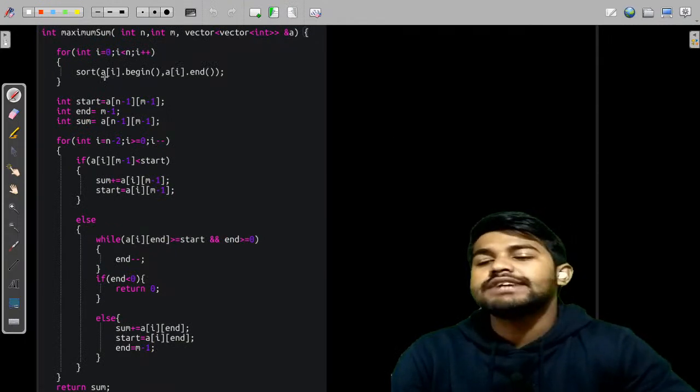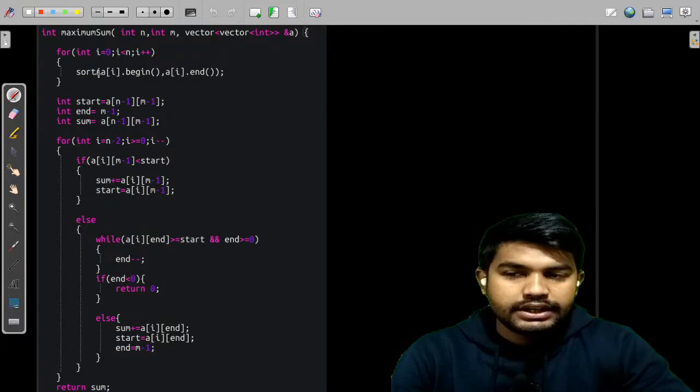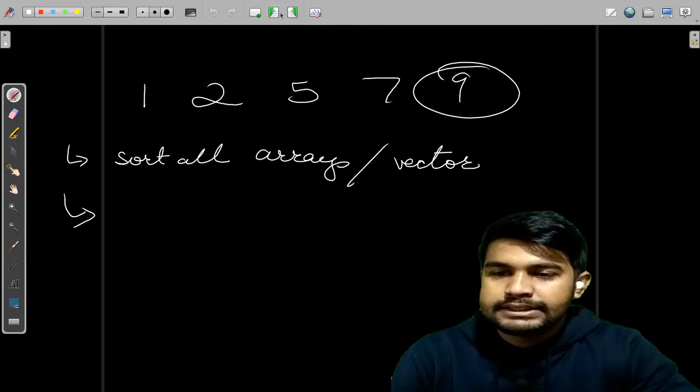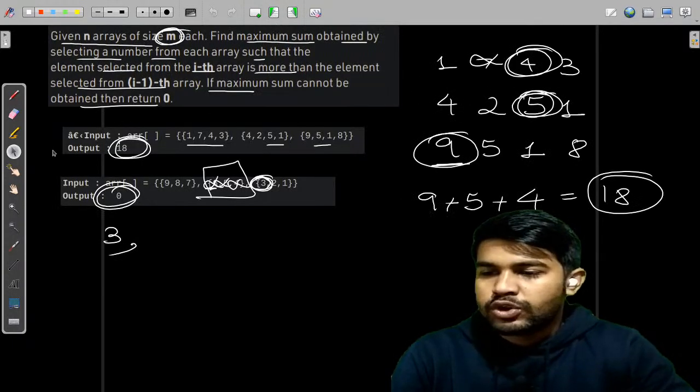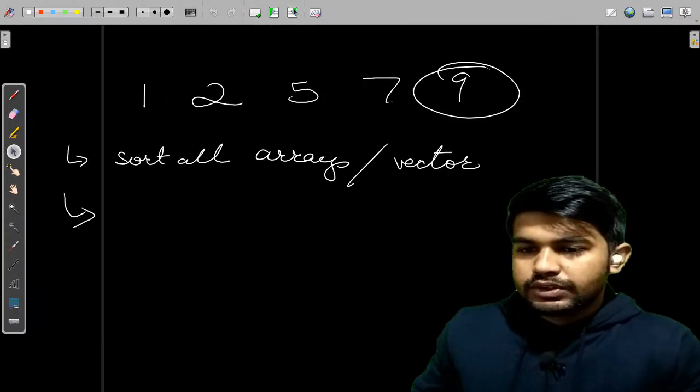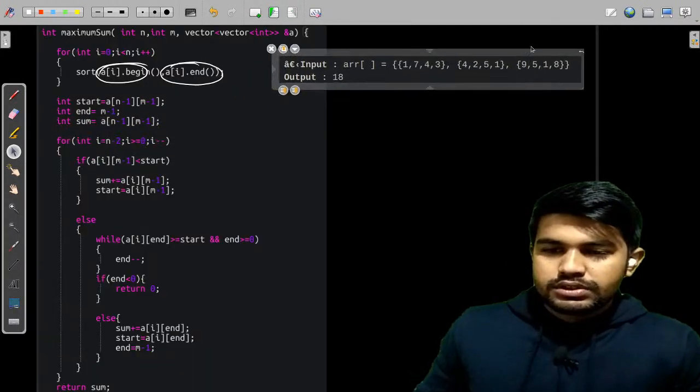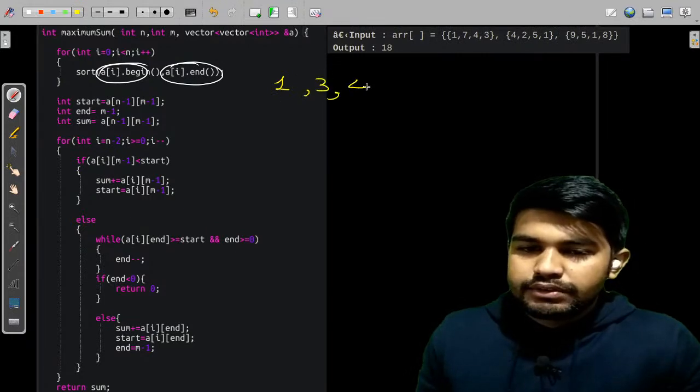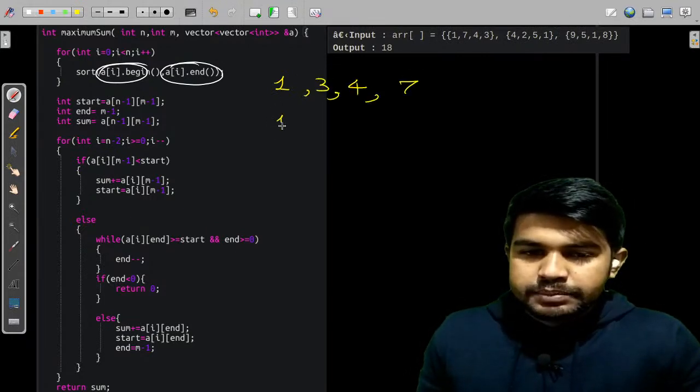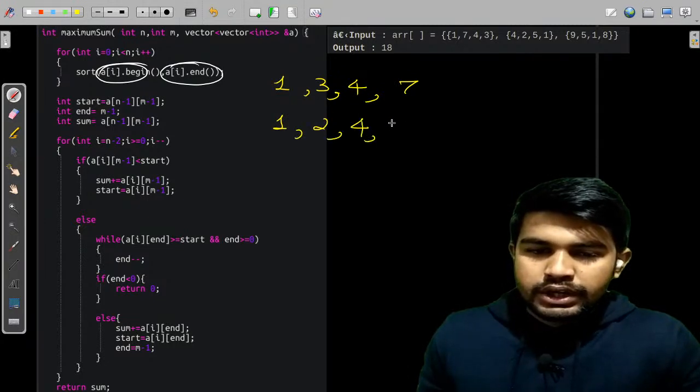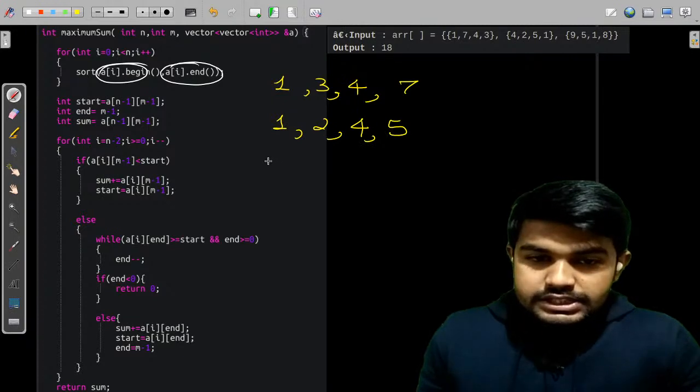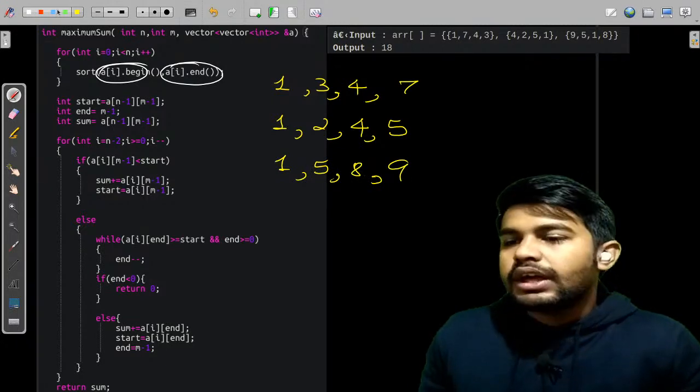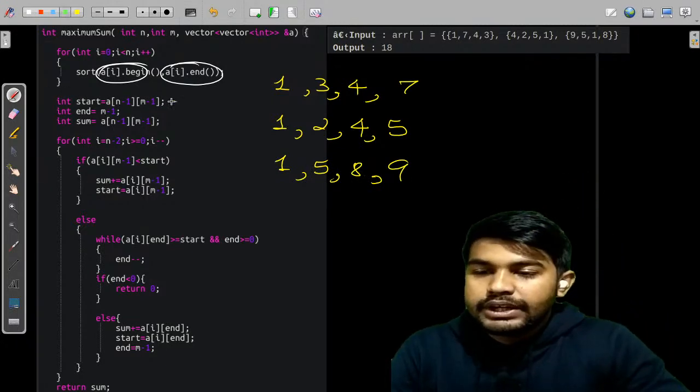Now let us move to the coding part. What we are doing is we are taking hold of each of the vector, we are sorting it from front to the last. After sorting, this would become 1, 3, 4 and 7. This would become 1, 2, 4 and 5. And this would become 1, 5, 8 and 9.